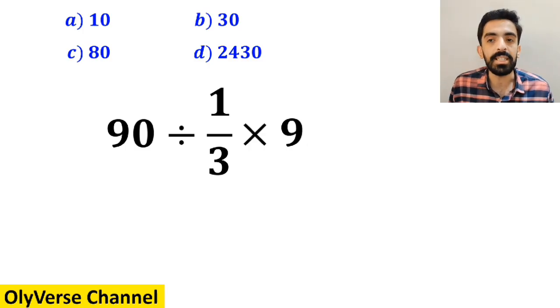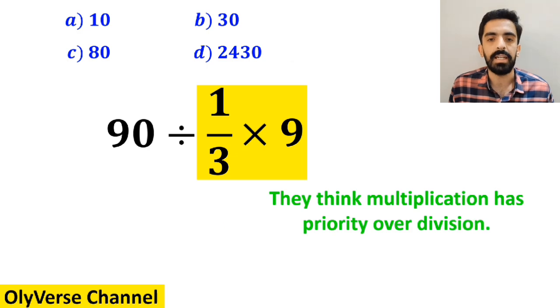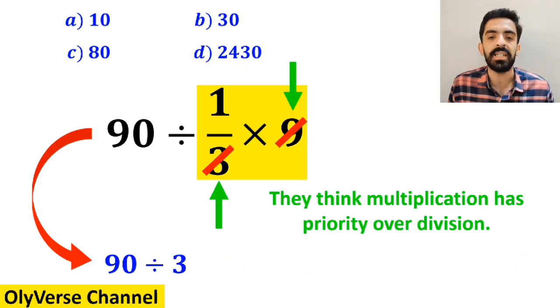At the beginning of solving this question, many people go straight to the expression 1 over 3 multiplied by 9, which I have highlighted in yellow, because they think multiplication has priority over division. They say it's easy to simplify the 9 with the 3 in the denominator and write this expression as 90 divided by 3, which finally gives them the answer 30.